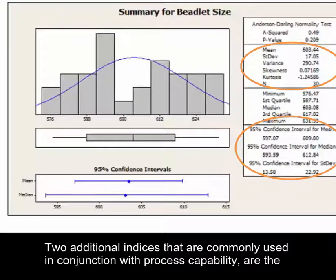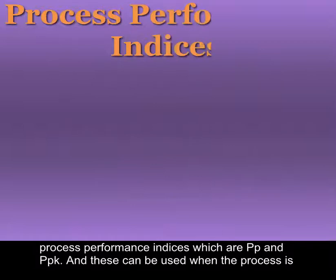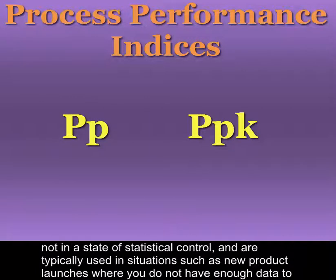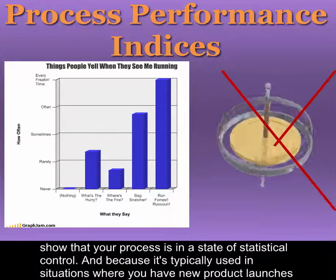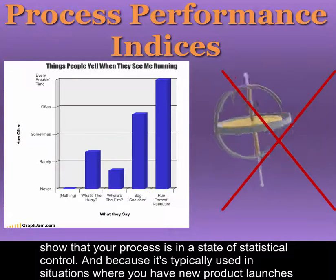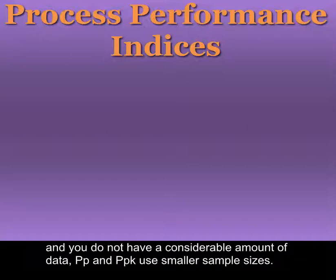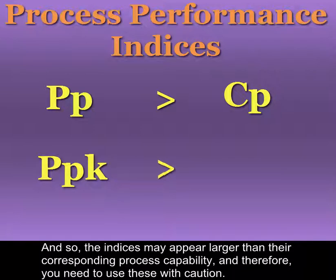Two additional indices commonly used in conjunction with process capability are the process performance indices PP and PPK. These can be used when the process is not in a state of statistical control, and they're typically used in situations such as new product launches where you do not have enough data to show statistical control. Because they're used with smaller sample sizes, the indices may appear larger than their corresponding process capability indices, and therefore you need to use these with caution.